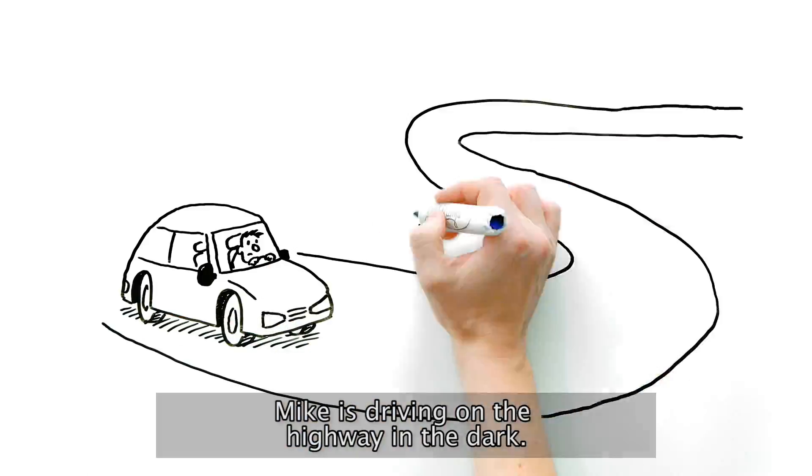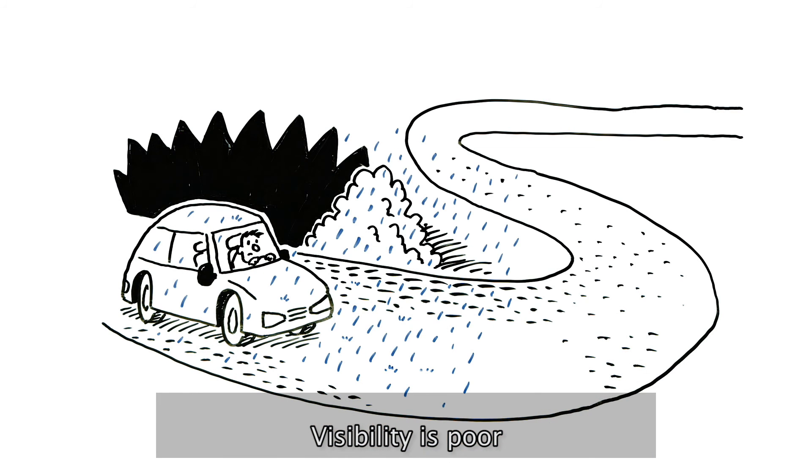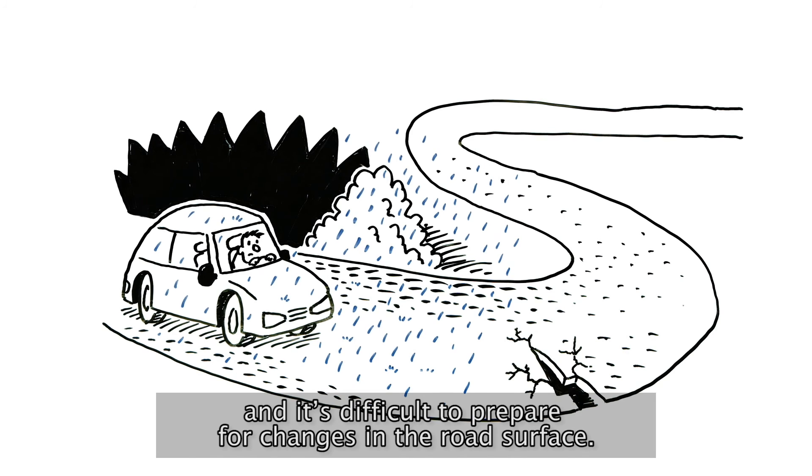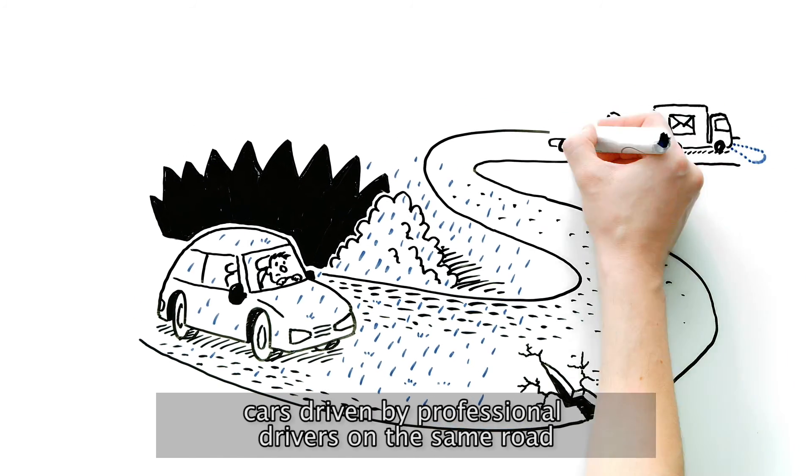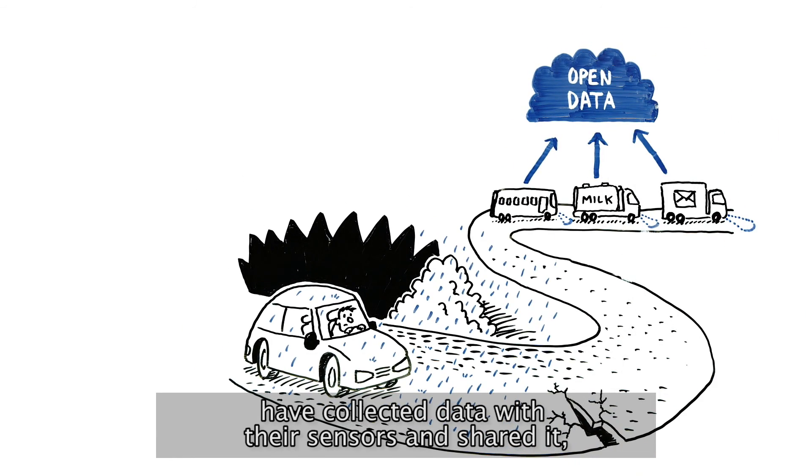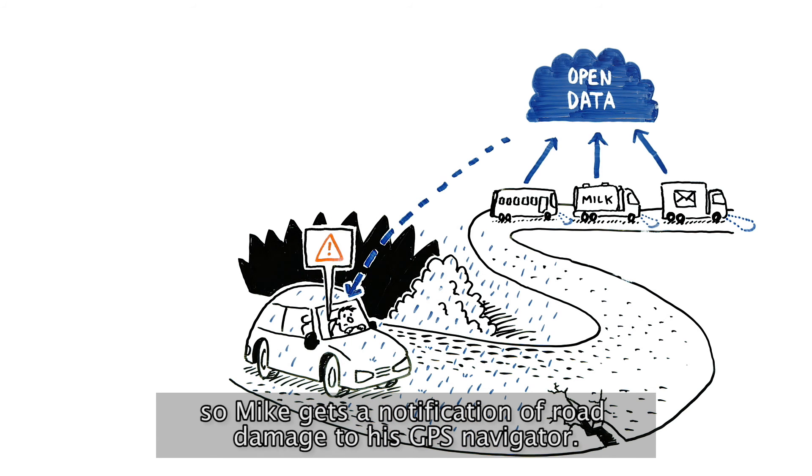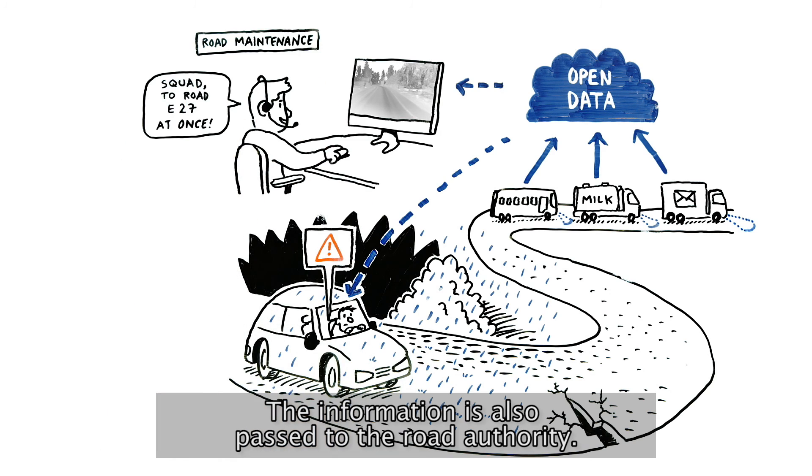Mike is driving on the highway in the dark. Visibility is poor, and it's difficult to prepare for changes in the road surface. However, cars driven by professional drivers on the same road have collected data with their sensors and shared it. So Mike gets a notification of road damage to his GPS navigator. The information is also passed to the road authority.